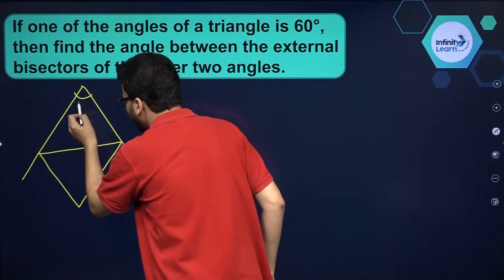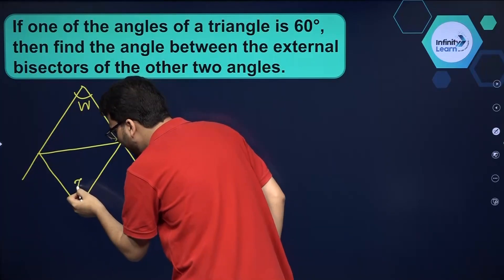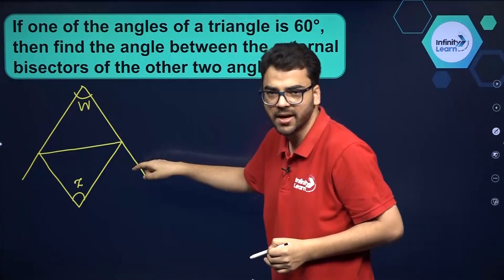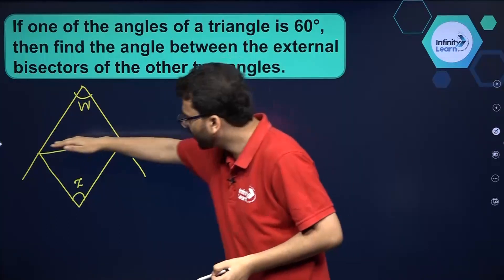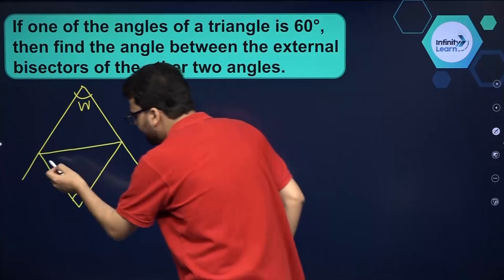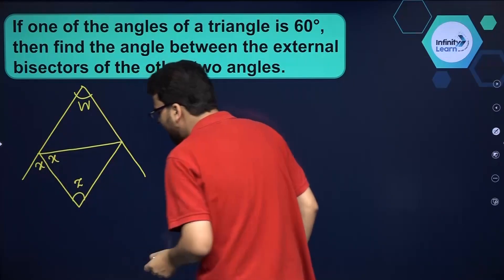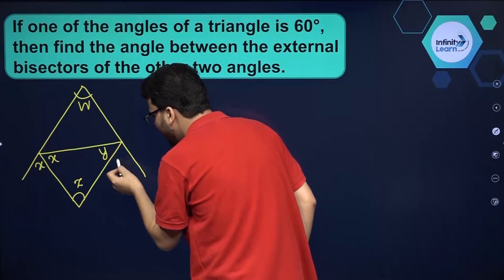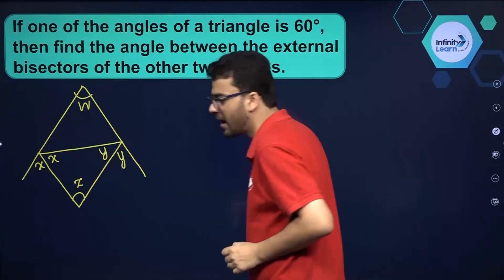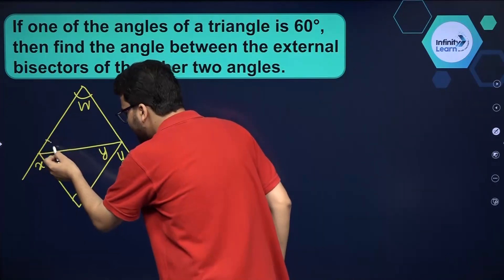Suppose this angle at the top is w, and we have to find the angle between the external bisectors of the two base angles. Suppose this angle is x — this is also x because this is the bisector. And if this angle is y, this is also y because this is the bisector.